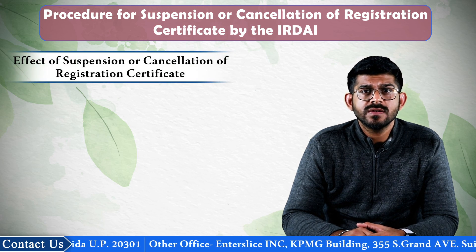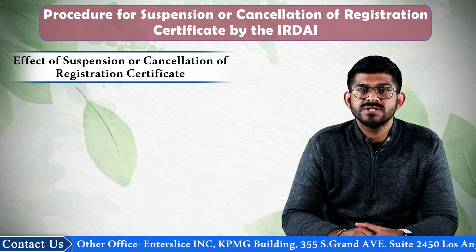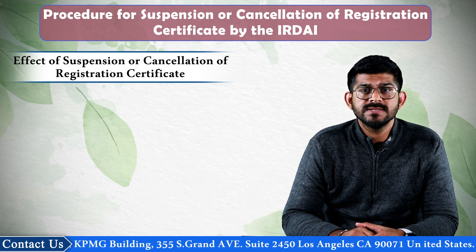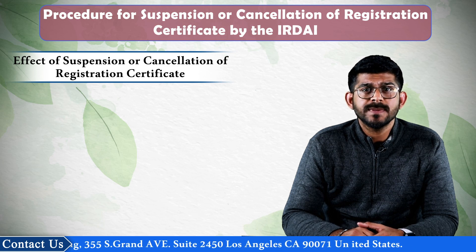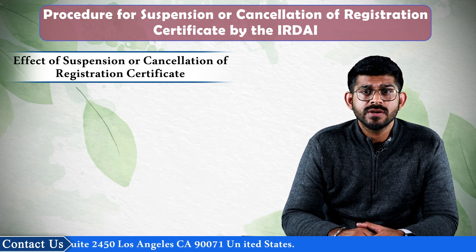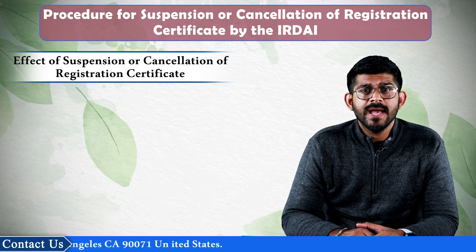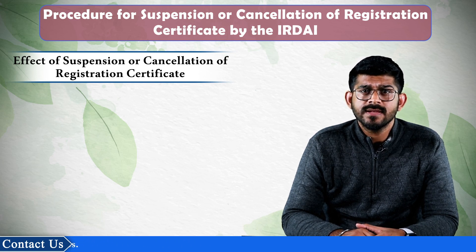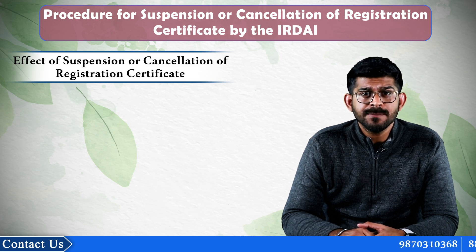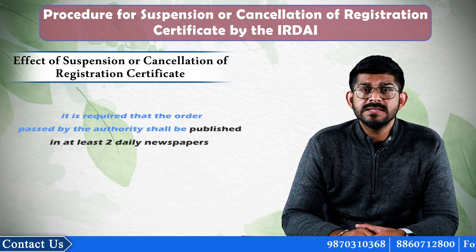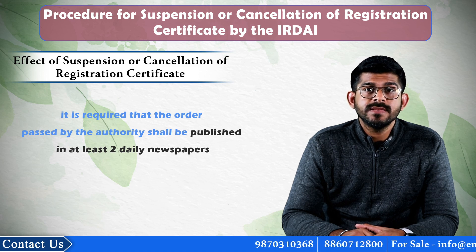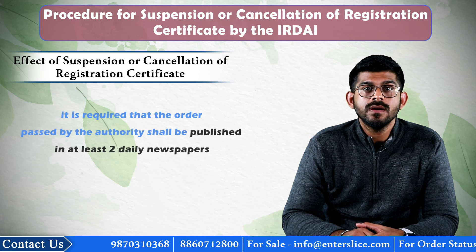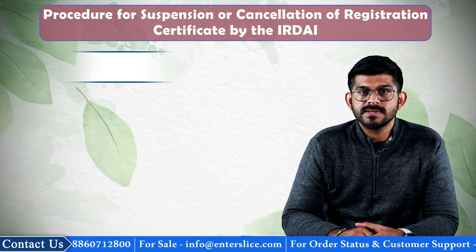Now we will discuss the effect of suspension or cancellation of the registration certificate. From the date of suspension or cancellation, the insurer shall cease to undertake any new transaction for insurance business. However, the authority can allow the insurer to continue serving the existing policyholders. Further, it is required that the order passed by the authority shall be published in at least two daily newspapers in the area where the insurer has its principal place of business.